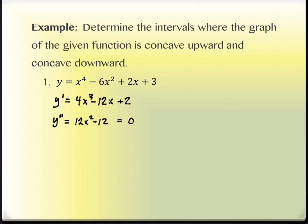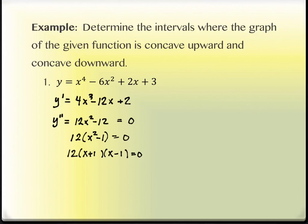So where will 12x squared minus 12 equal zero? We can factor: take out a 12, giving x squared minus 1, which factors as (x + 1)(x − 1). So x equals negative 1 and positive 1. These aren't called critical points, but they're acting like the critical points did in the previous section — there's actually not a name for them. We're going to draw them on a number line in order, and test points in these intervals: negative 2 before negative 1, zero between, and 2 after positive 1.